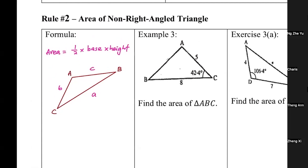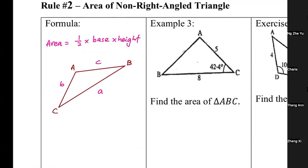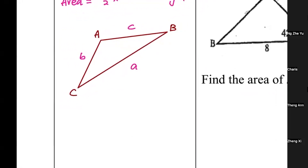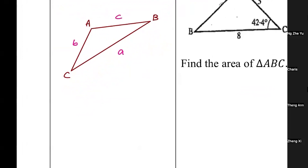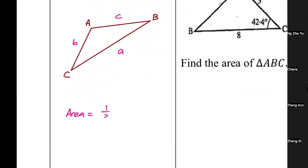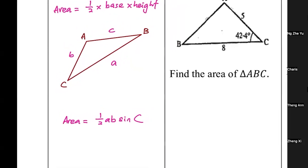Here is the formula you need to remember and write down: the area equals one over two times a times b times sine C. I'll now show you how this formula actually comes about.